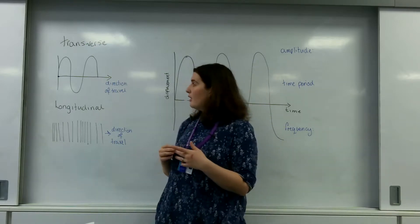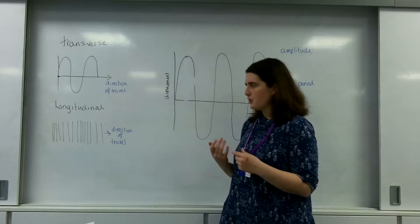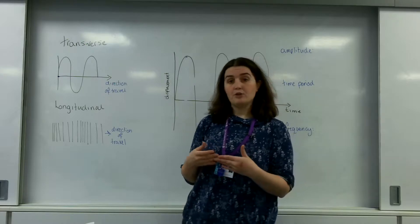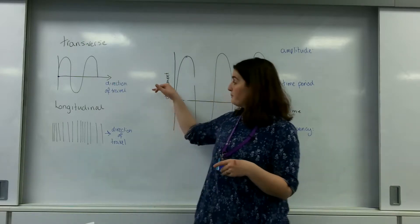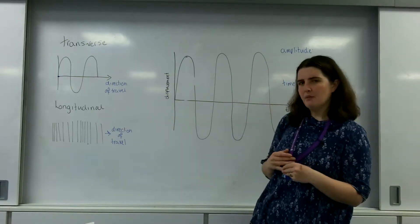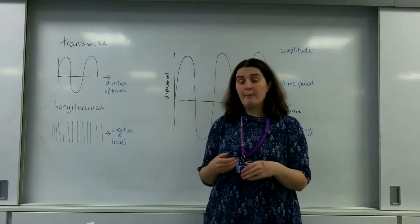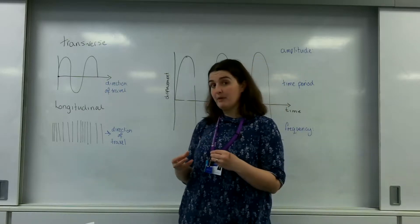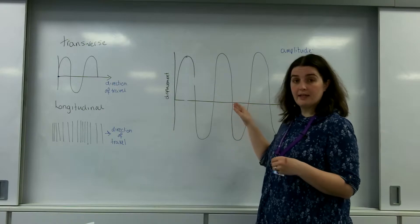Now for a transverse wave it's very easy to get some information from it. Longitudinal is much harder so there is a way of actually plotting it onto a graph where we can get a lot of information from it and this is a displacement time graph. What this means if I was to look at a particle as a wave moves through it and plot its displacement from where it originally was and the time it happens, I would actually get a graph like this.